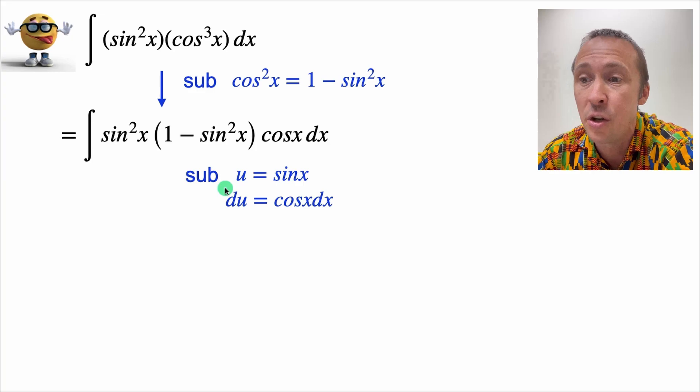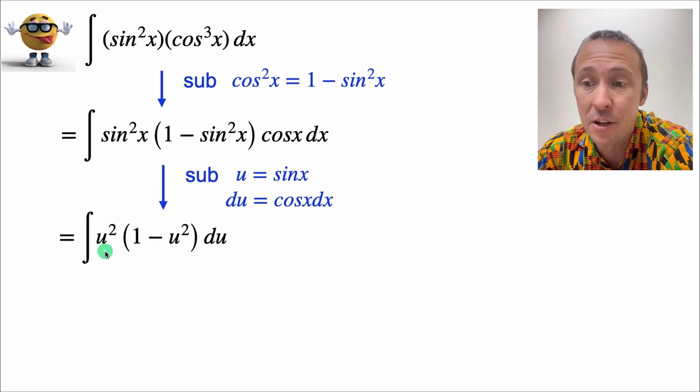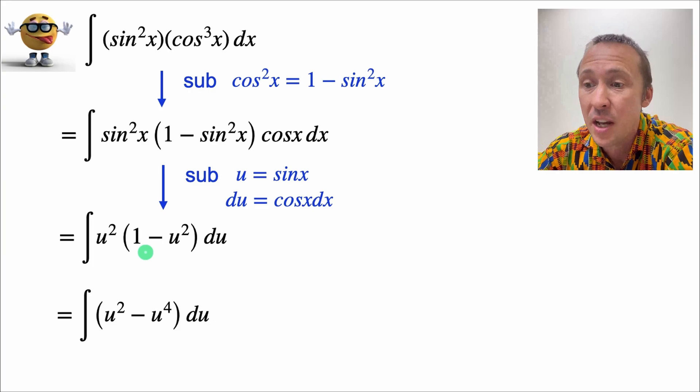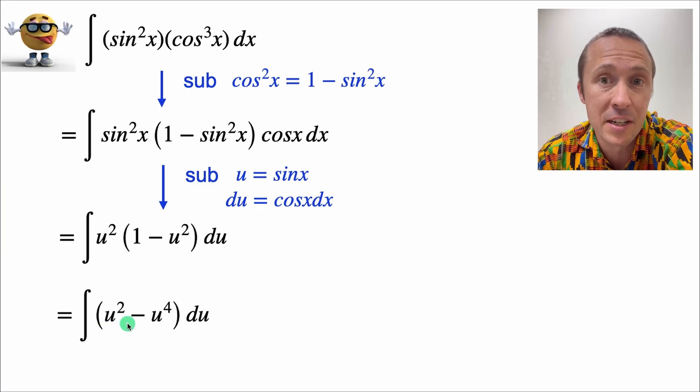So this cos x dx becomes du. Our integral becomes the integral of u squared times 1 minus u squared, which we can distribute.